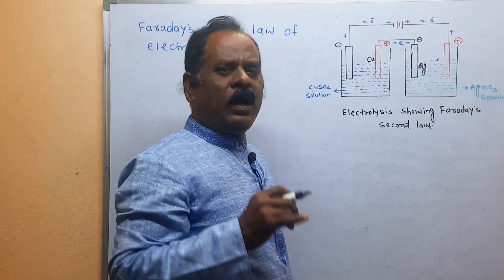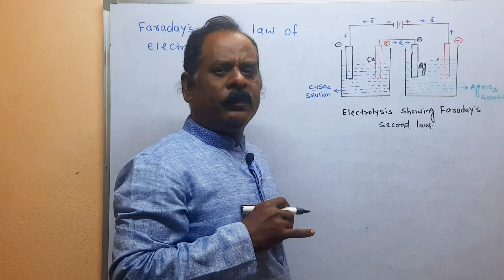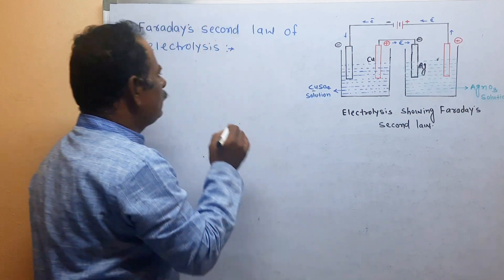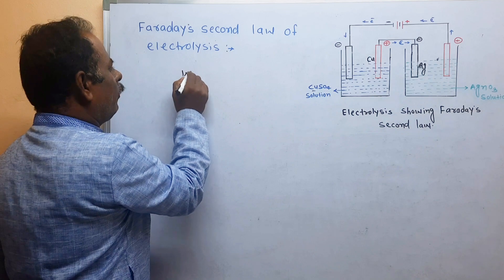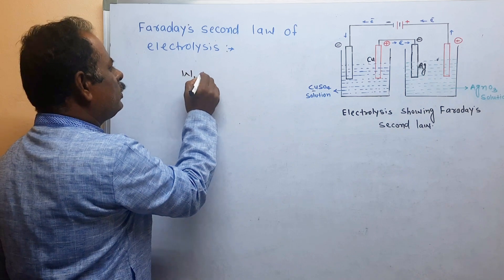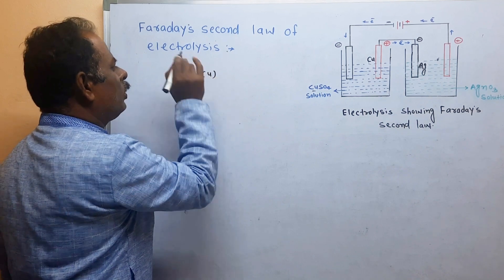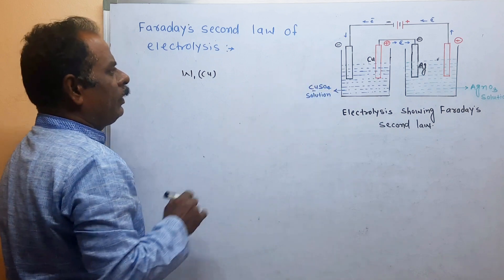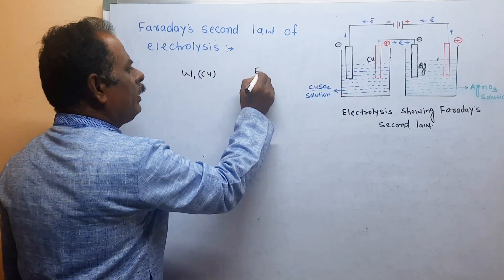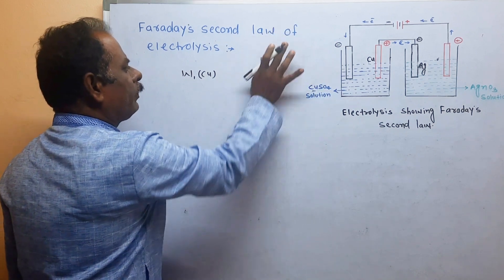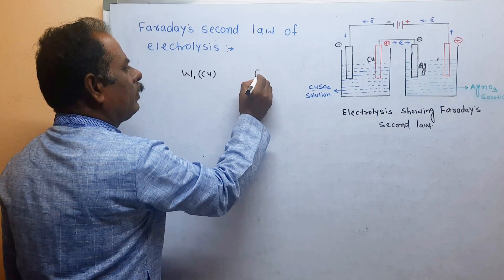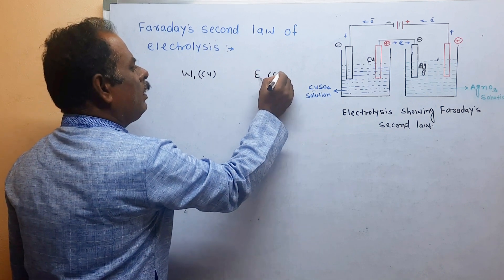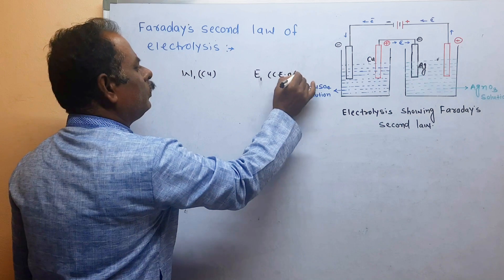Mathematically, how do we write the second law? Let W1 be the weight of copper deposited on the cathode, and E1 be the chemical equivalent of copper (Cu).